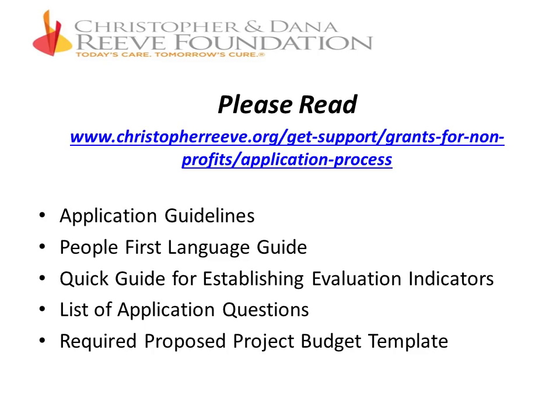The most important thing to get out of today's presentation is to please read the application guidelines and the information provided on the website. Go to www.christopherreeve.org, then Get Support, then Grants for Nonprofits, and Application Process. There you'll find the application guidelines, a People First Language Guide, a Quick Guide for Establishing Evaluation Indicators, a list of all application questions, and the required proposed project budget template.